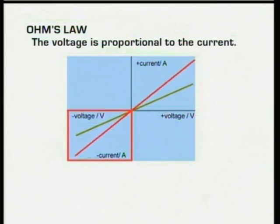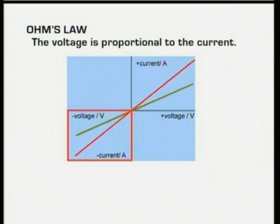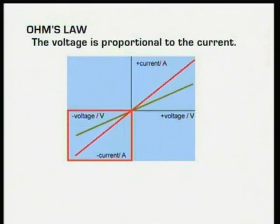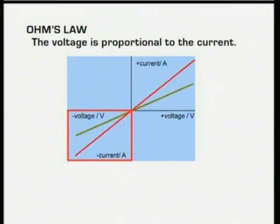You might have spotted that the straight line graph continues into the negative quadrant. When the straight line graph is in the negative quadrant, the voltage across the resistor is negative, which means it's been connected the other way around. The graph also shows that the flow of current is negative as well, which means that when the resistor is connected the other way around, the current just flows the opposite way through it.